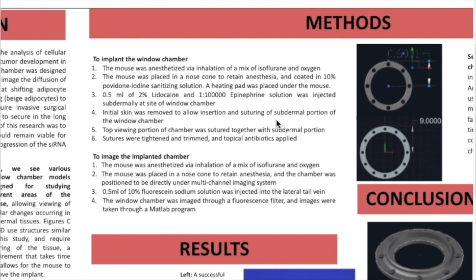To implant the window chamber, I have to anesthetize the mouse by inhalation of isoflurane and oxygen. It passes out and is completely anesthetized so it doesn't feel anything during the surgery. I then go through sterilizing procedures such as coating it in iodine as a sanitizing solution, sanitizing all instruments in autoclave, and putting them in ethanol while doing the surgery. The first surgical step is injecting the mouse with a lidocaine-epinephrine mixture to reduce bleeding and soreness overall. Then I start the procedure by removing the skin that I marked up previously with the marker and the window chamber, making sure I always remove less skin than I need. I insert the chamber by suturing — there's a ring that goes inside the skin and one on top, sewed together so it sandwiches the skin between the two parts of the chamber.